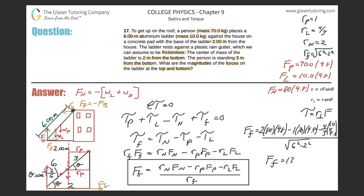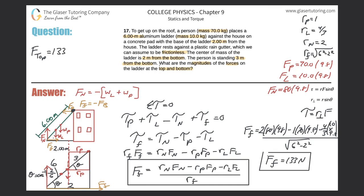The result is approximately 132.8 newtons, which we round to 133 newtons. That's the force due to friction. Since the force of friction equals the force of the building, the force at the top of the ladder is also 133 newtons in magnitude.